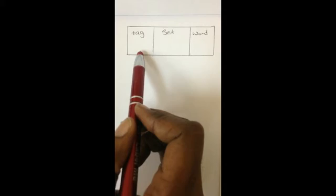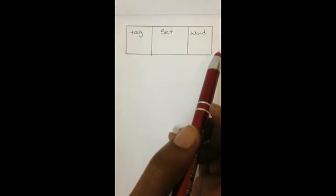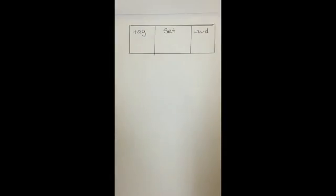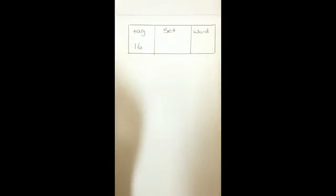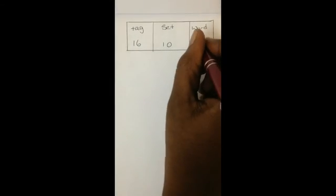So coming back to our address structure, which has the tag, set, and word, we would have calculated the tag, which gave us 16, and our set, which gave us 10, and our word, which gave us 5.